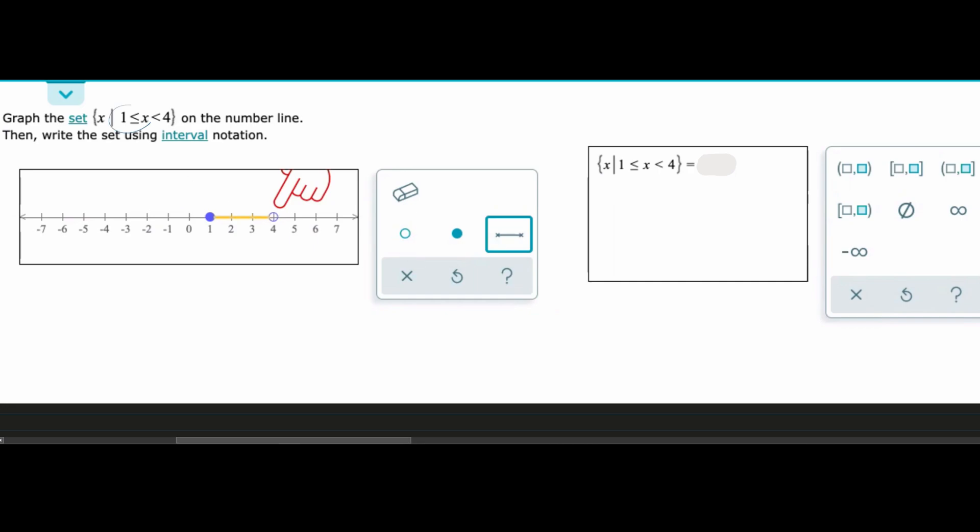And so for this entire left side we're going to plot it right here. For this right side we're going to plot it right here, and then the x can be anything in between here. So that is how the number line would work and now we're going to look at this part right here.